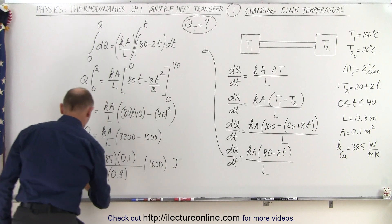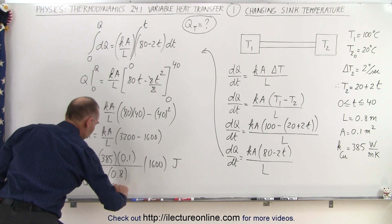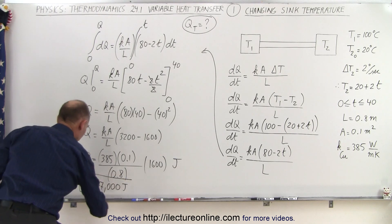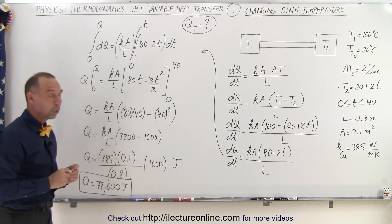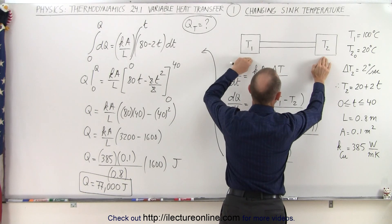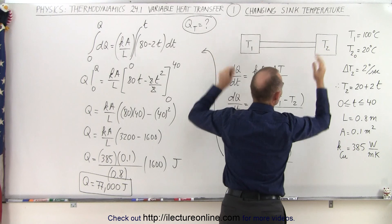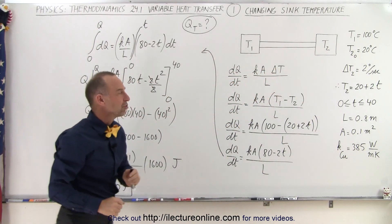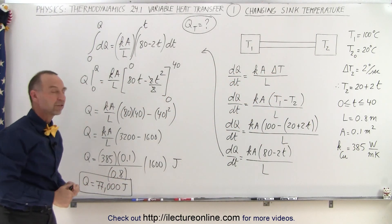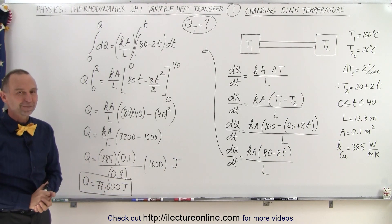So Q is equal to 77,000 joules, the total heat transferred during the 40-second period when the heat sink starts at 20 degrees centigrade, so the difference is 80, until the heat sink reaches 100, where the difference is zero. And of course, at that point, there's no longer any heat transfer, but the total heat transferred during that time is 77,000 joules. And that's how it's done.